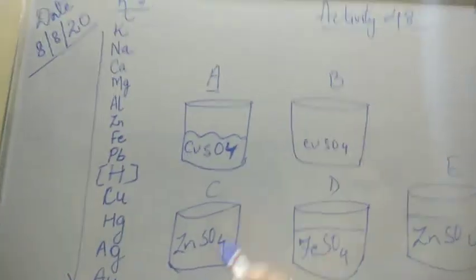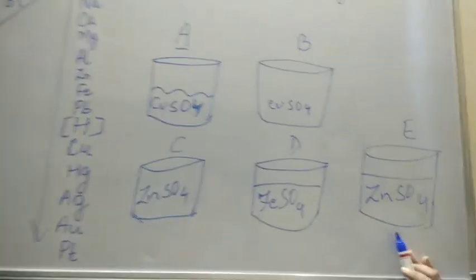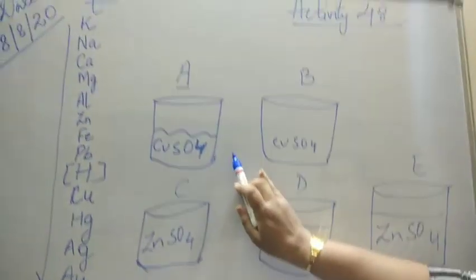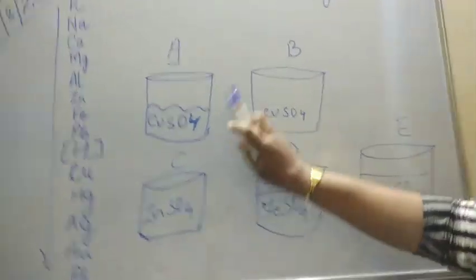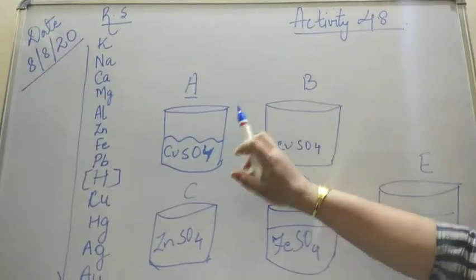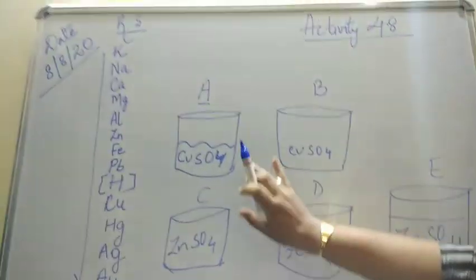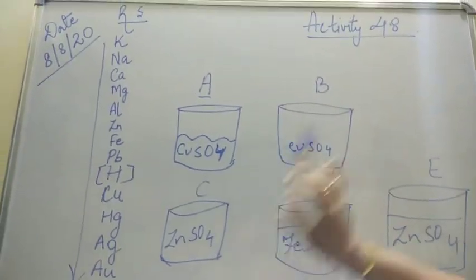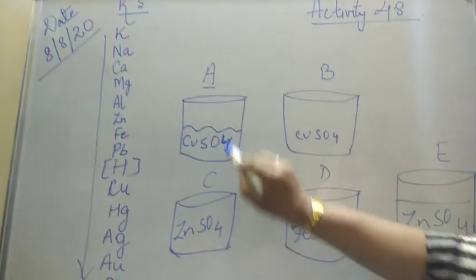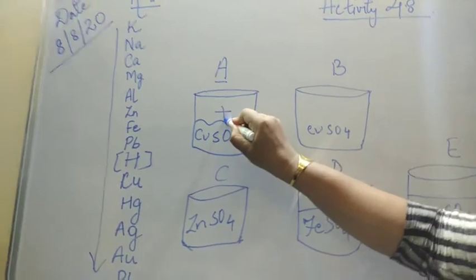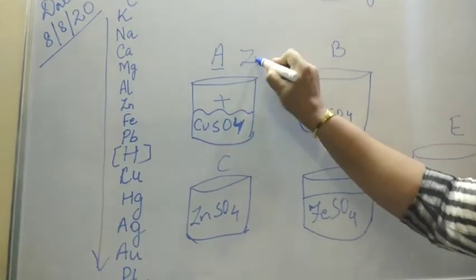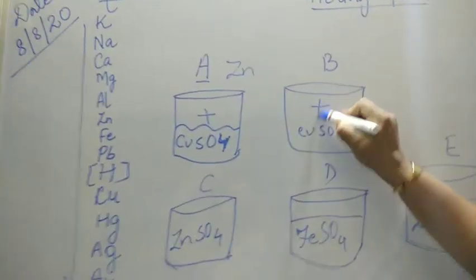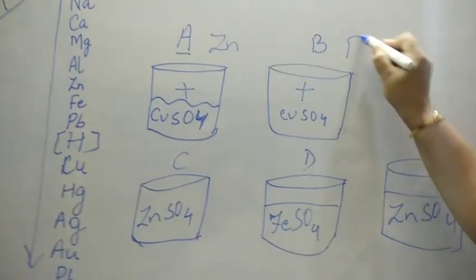CuSO4, CuSO4, ZnSO4, FeSO4, ZnSO4. So here, let's start putting the next element, that is the element which is in a metal form. Because we have to see the displacement reaction of metals. So in the first beaker I will add some amount of zinc, Zn. Second beaker, I will add some amount of iron.